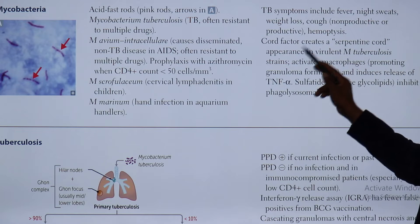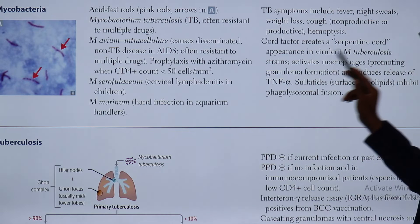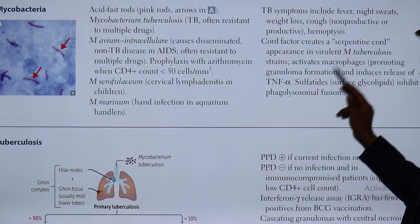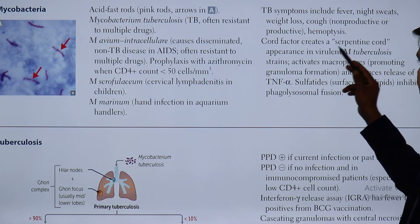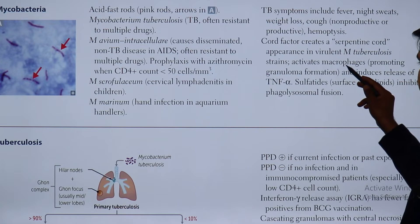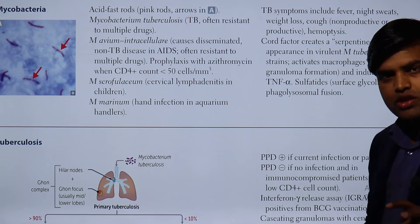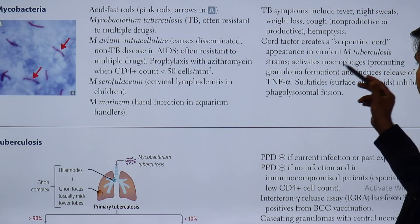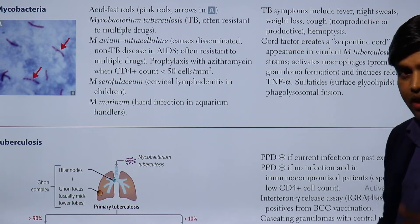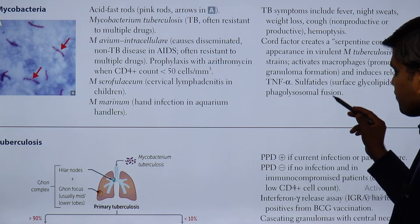The cord factor creates a serpentine cord appearance in virulent mycobacterium tuberculosis strains. The cord factor is a virulence factor present in virulent mycobacterium tuberculosis. It helps in the serpentine cord appearance, activates macrophages promoting granuloma formation, and induces the release of TNF-alpha. Mycobacterium tuberculosis activates macrophages, which helps in granuloma formation, and they also induce the release of TNF-alpha.